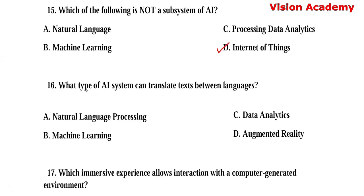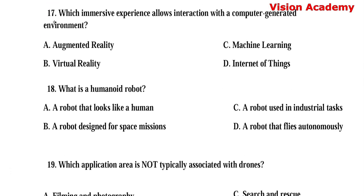Question number 16. What type of AI system can translate texts between languages? Option A: Natural language processing. Option B: Machine learning. Option C: Data analytics. Option D: Augmented reality. Here, option A, natural language processing, is the right answer.